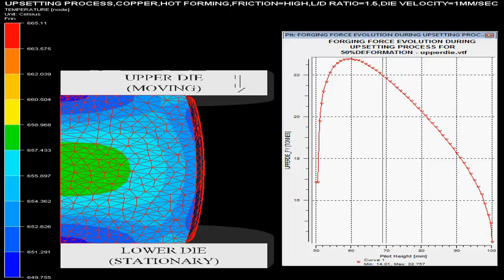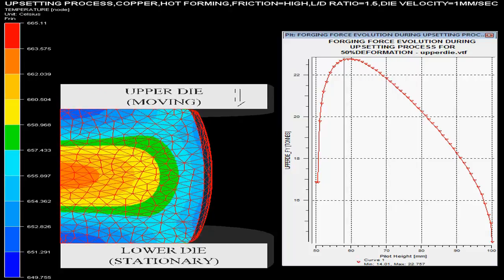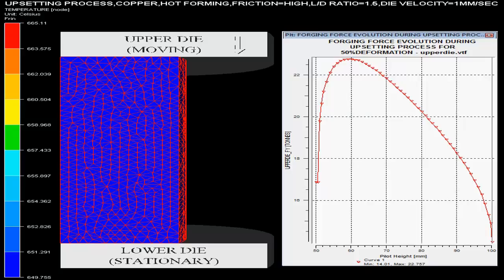High friction between billet and dies is shown on the top end in the video. The upper die presses with a velocity of 1 mm per second with the lower die stationary.